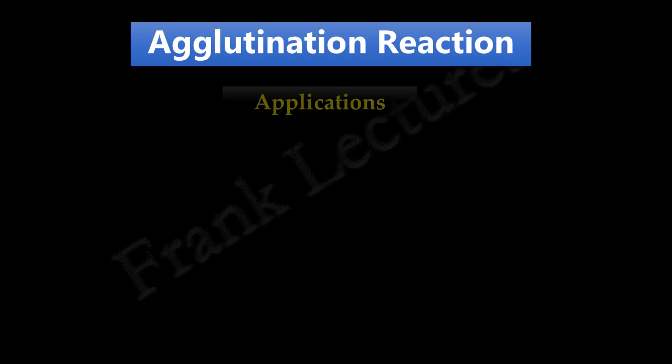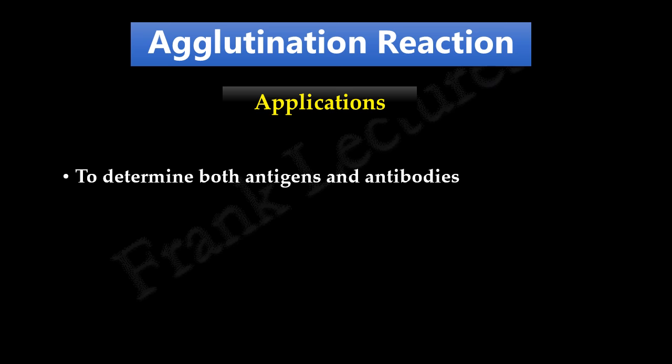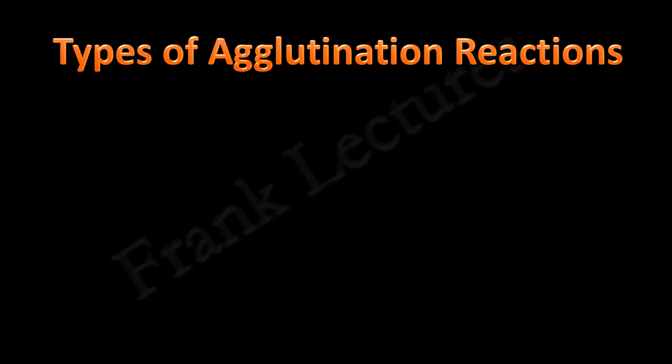In diagnostic immunology, agglutination reactions have a wide variety of applications. They are used for the detection of both antigens and antibodies in serum and other body fluids. Most importantly, agglutination tests are performed routinely by blood banks to determine A, B, O, and Rh blood types in preparation for transfusions. In this video lecture, we will have an overview of types of agglutination reactions in diagnostic immunology and their applications.